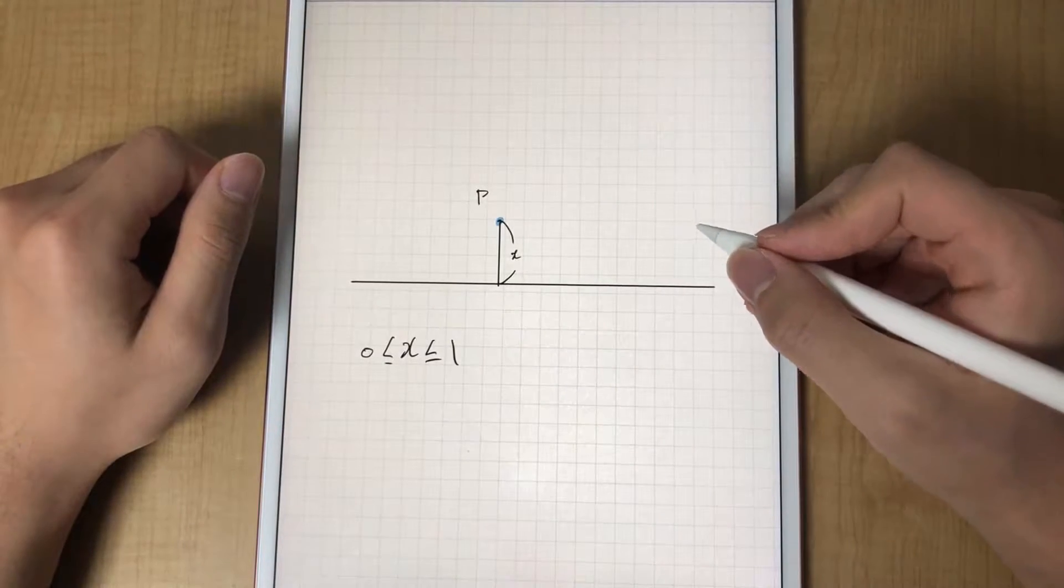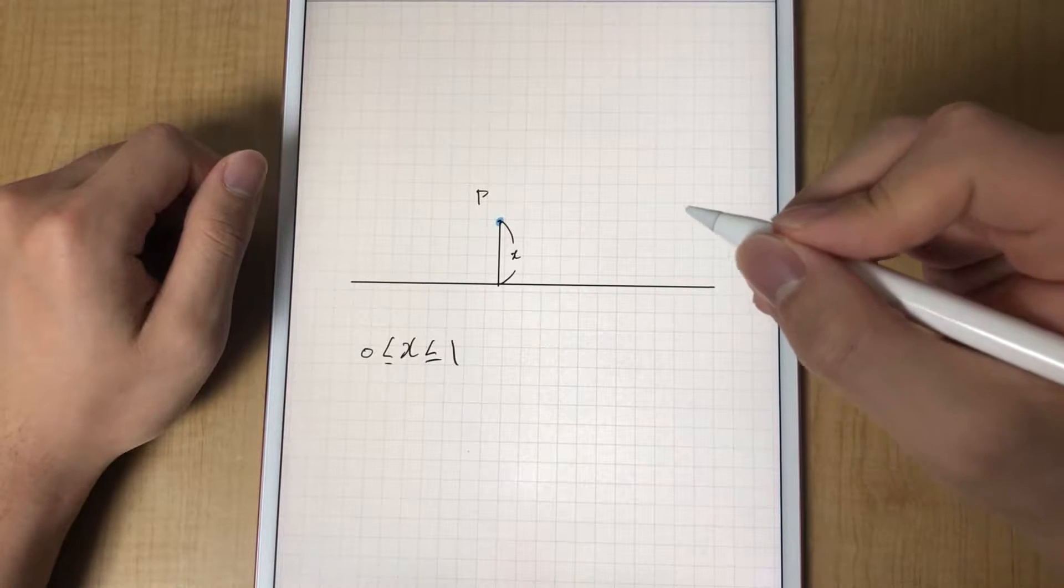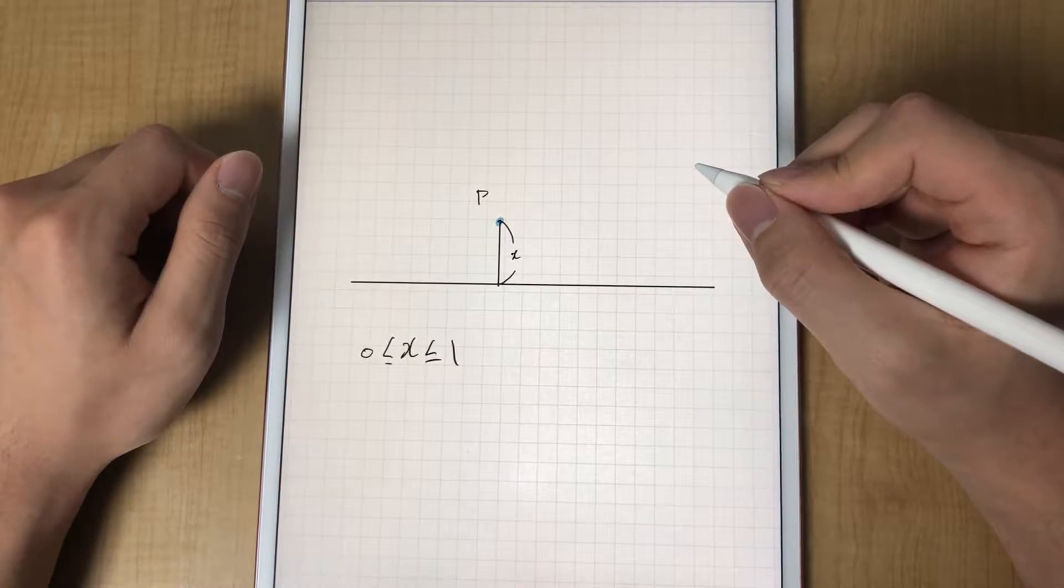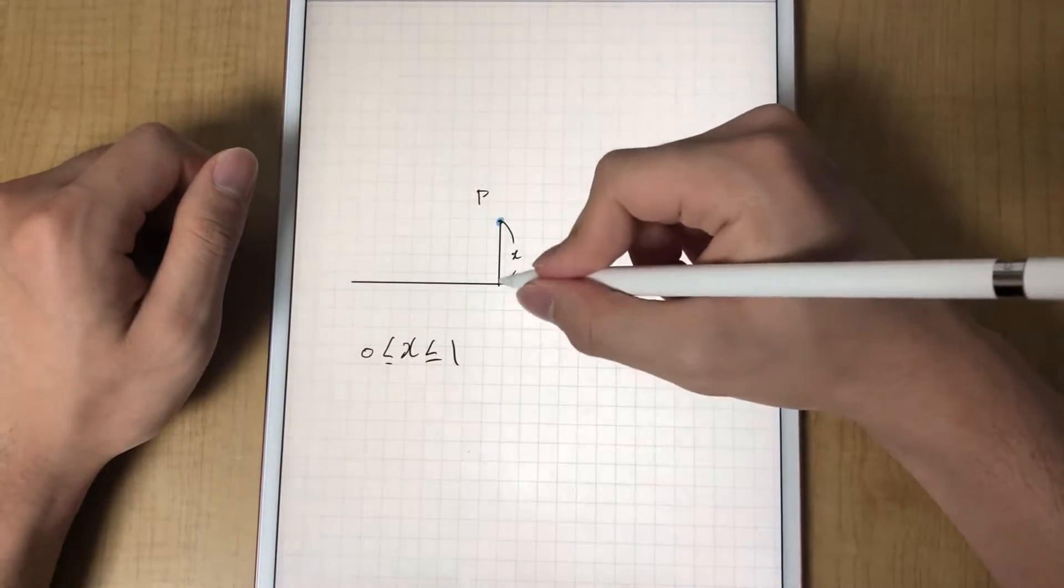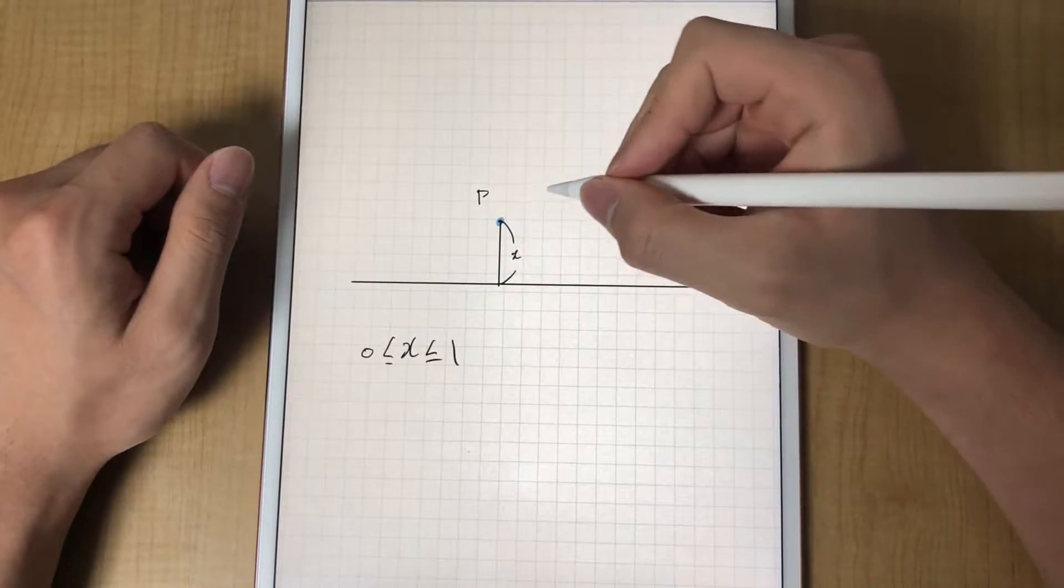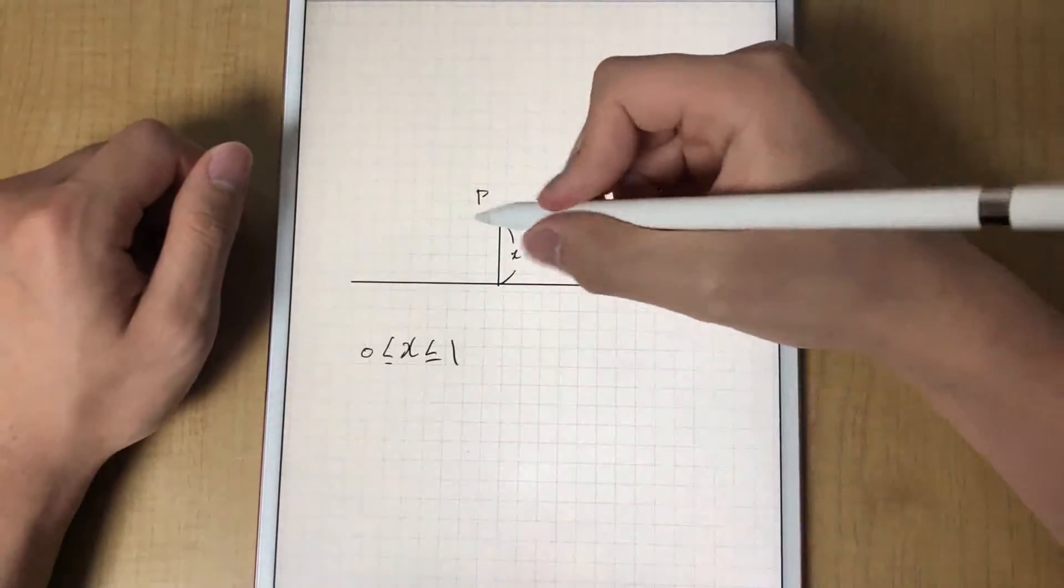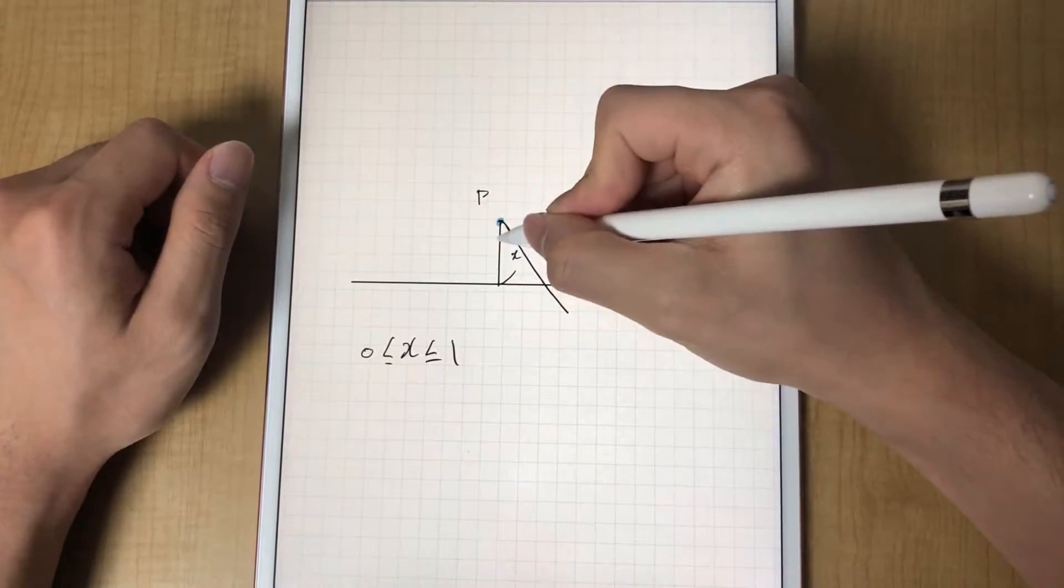Now we will consider the angle that the needle will fall on. Let's call the angle between the perpendicular line crossing P and the needle as zeta. For example, if the needle were to fall down like this, then this would be zeta.